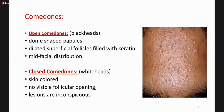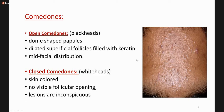Comedones are of two types: open and closed. Open comedones are dilated superficial pilosebaceous follicles filled with keratin, appearing as dome-shaped papules with a blackish plugging, in a facial distribution. Closed comedones, seen as whiteheads, have no visible follicle or orifice openings, are skin-colored, and are fewer in number.